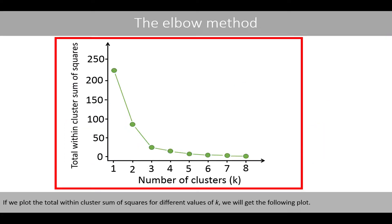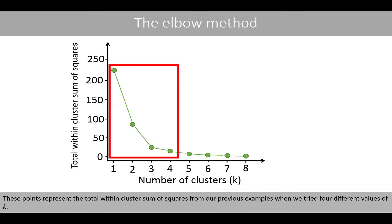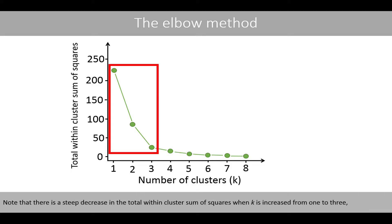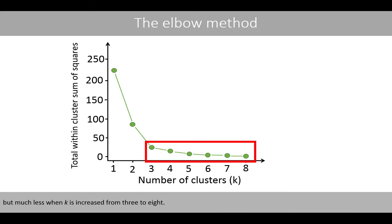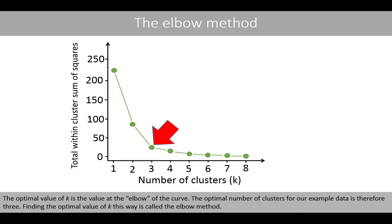If we plot the total within-cluster sum of squares for different values of k, we get the following plot. These points represent the total within-cluster sum of squares from our previous examples when we tried four different values of k. Note that there is a steep decrease in the total within-cluster sum of squares when k is increased from 1 to 3, but much less when k is increased from 3 to 8. The optimal value of k is the value at the elbow of the curve. The optimal number of clusters for our example data is therefore 3. Finding the optimal value of k this way is called the elbow method.